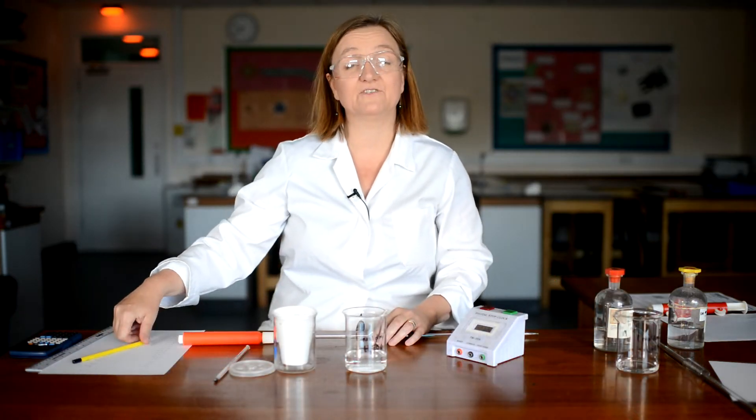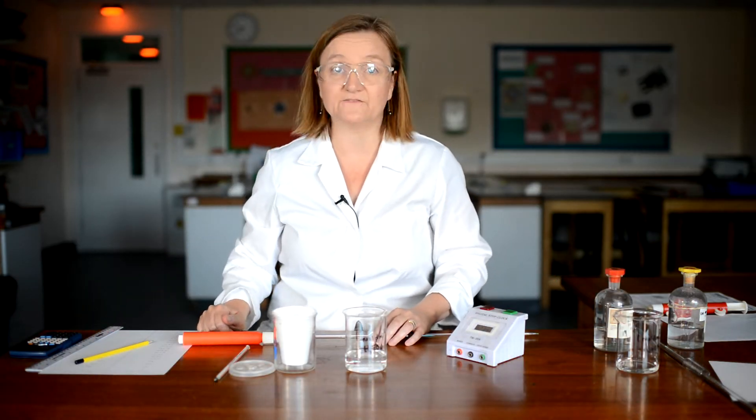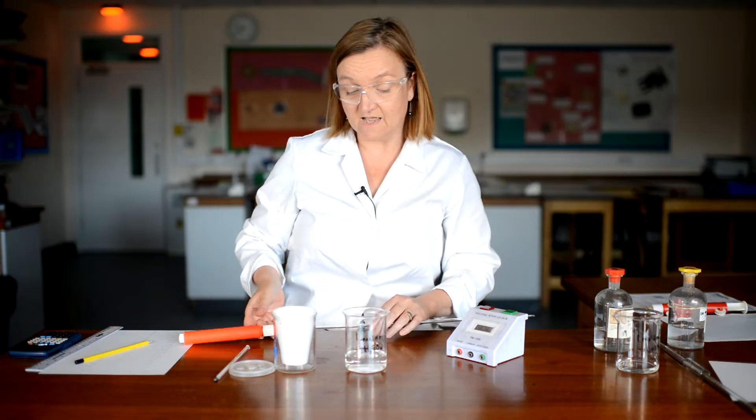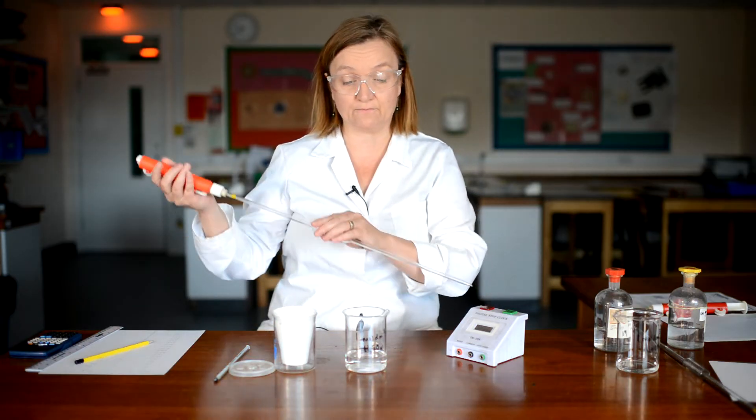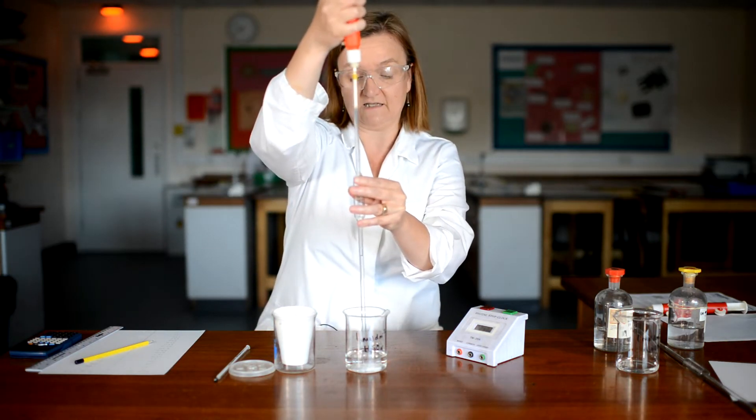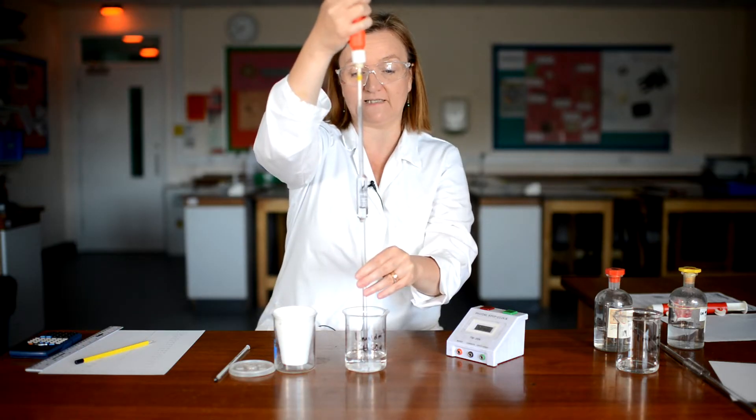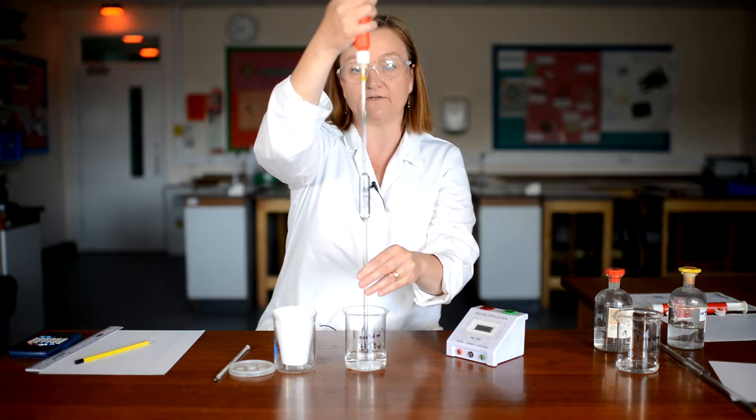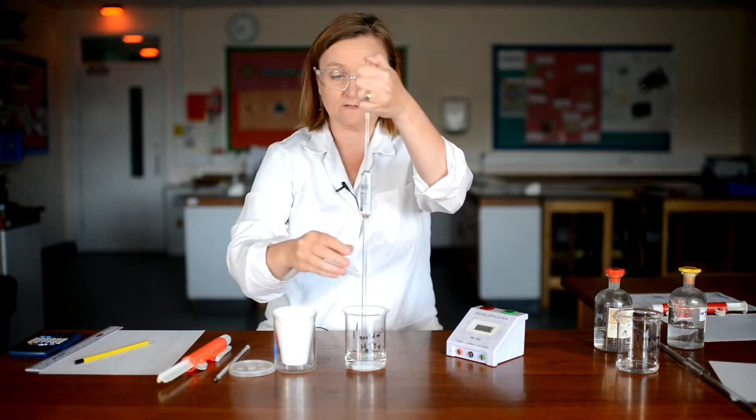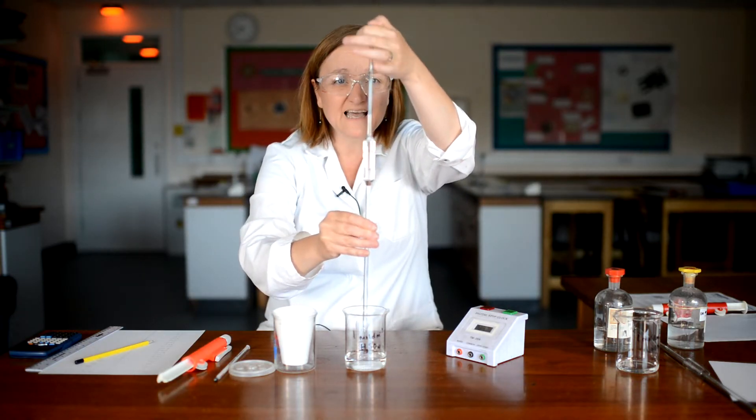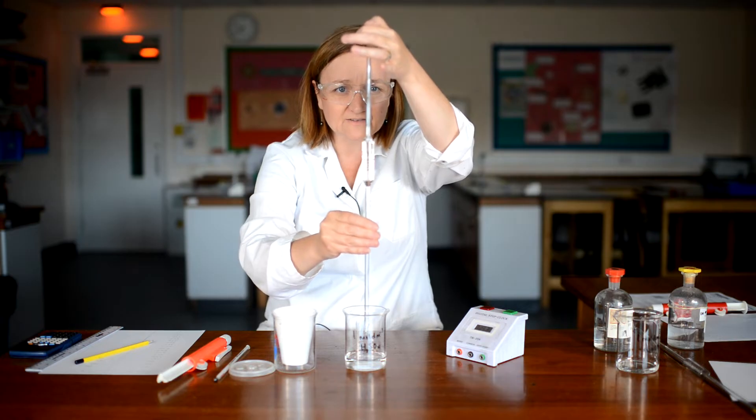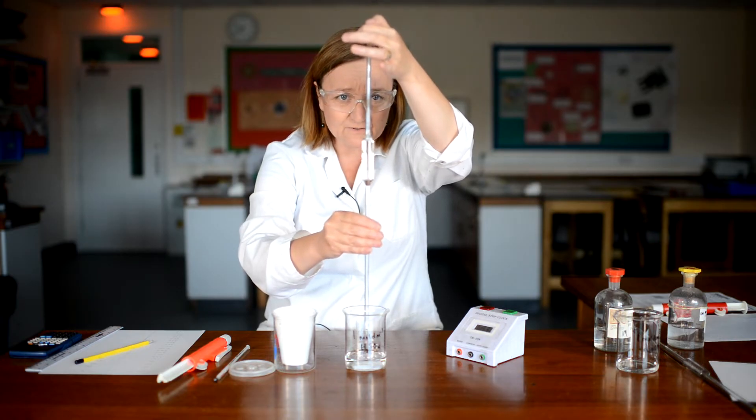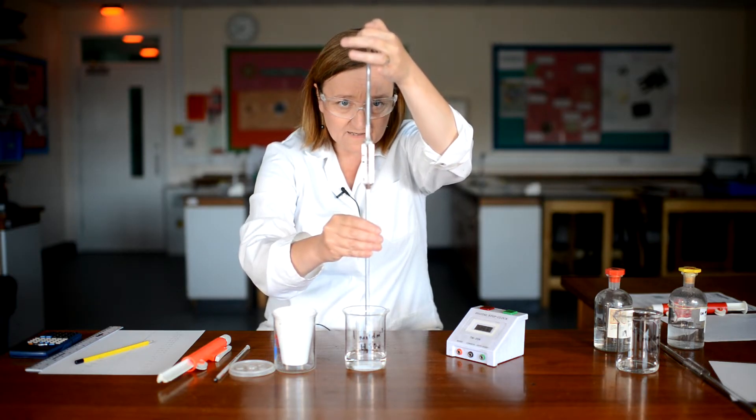So I've just taken my last reading of temperature at two and a half minutes and I want to add my acid at three minutes. So I've got 30 seconds to very quickly measure out 20 centimetres cubed of my sulphuric acid. So I'm using a different pipette. And again, just going to bring the meniscus down onto the line. So I've got it all ready to go in. There we go.